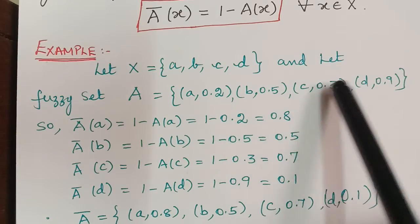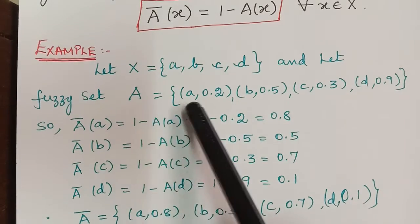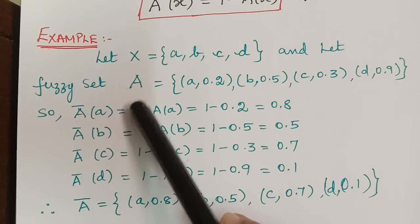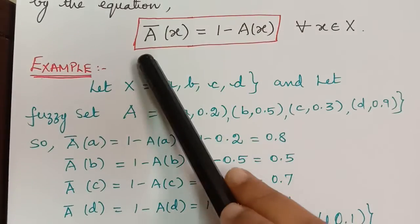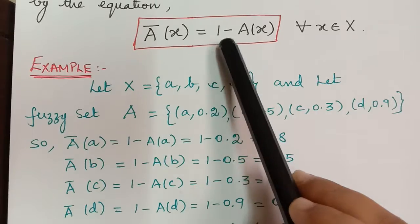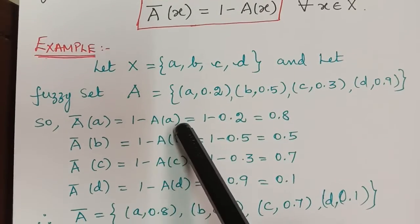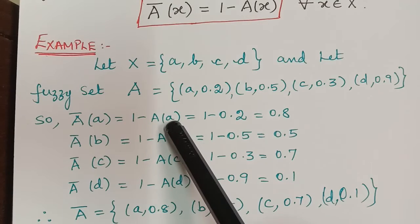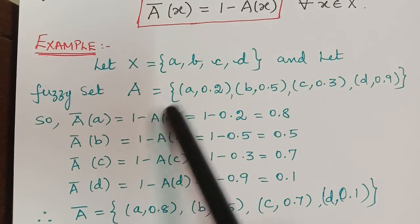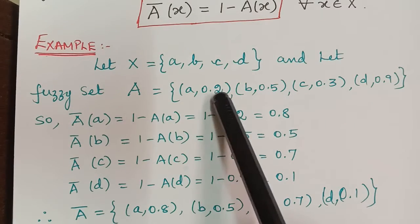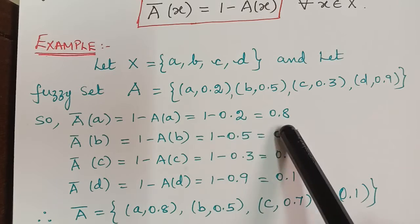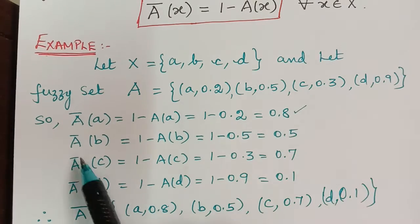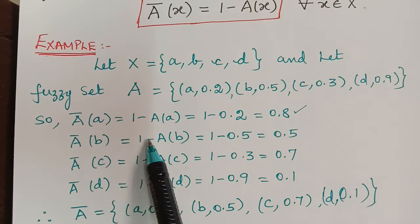We have to calculate ā for each element. ā(a) = 1 − A(a). The membership grade of a in A is 0.2, so ā(a) = 1 − 0.2 = 0.8.